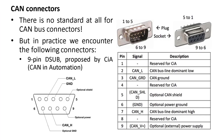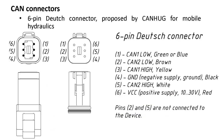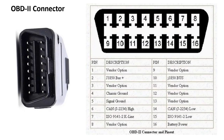There is no standard at all for CAN bus connectors, but in practice we encounter the following. We have the DB9 nine-pin connector, proposed by CAN in Automation, which has CAN low on pin 2 and CAN high on pin 7. We can have a five-pin connector used by DeviceNet, and a six-pin Deutsch connector. There is also the OBD2 connector — not really a CAN connector — but I include it because I will use it in my practical example. The CAN high is on pin 6 and CAN low is on pin 14.